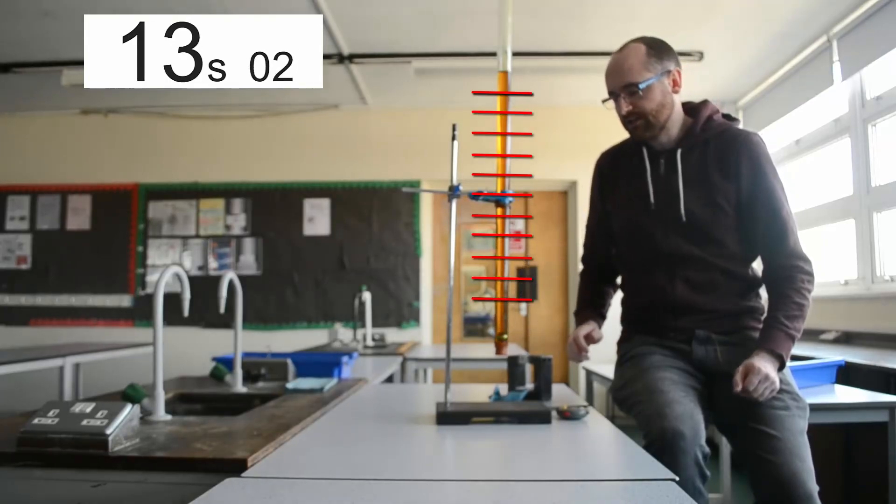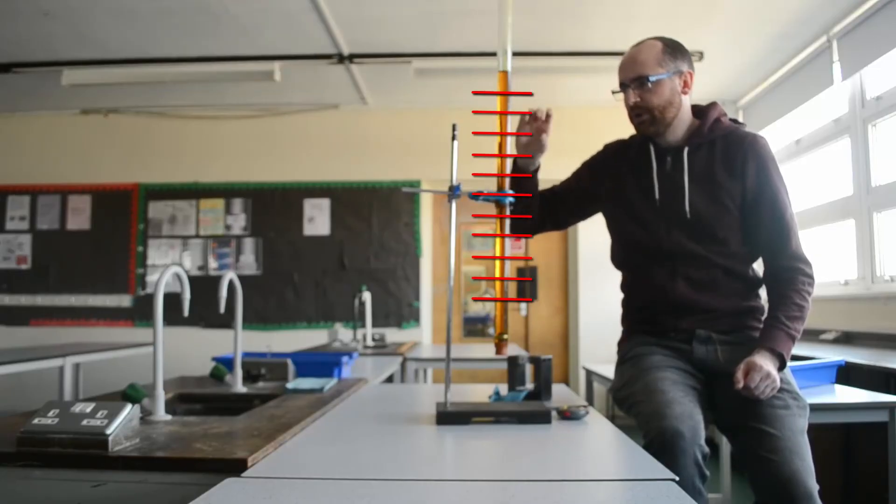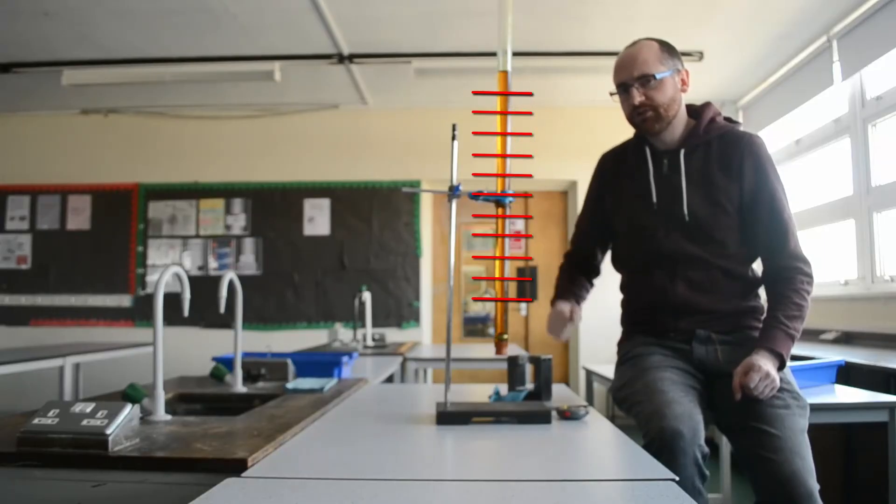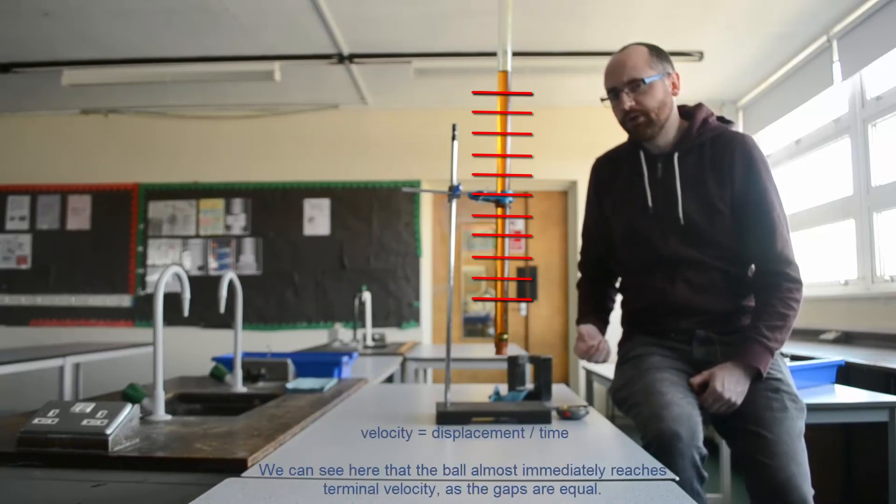Once we've got those markers on the tube, we can measure the distance between the markers. Because we know that the time between each marker is one second, we can do distance divided by one, which will give us the average velocity of the ball during that section.